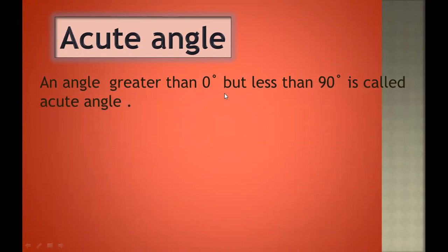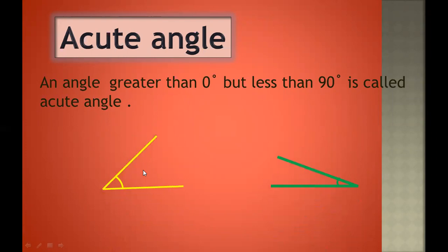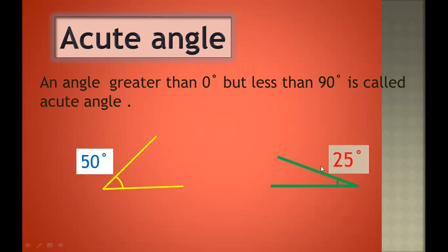An angle greater than 0 degree but less than 90 degree is called an acute angle. For example, this is our acute angle — because this is an angle of 50 degrees, and 50 is greater than 0 degree but less than 90 degree. So 50 degrees is our acute angle. See, this is an angle of 25 degrees and 25 is greater than 0 degree but less than 90 degree, so this is also our acute angle.